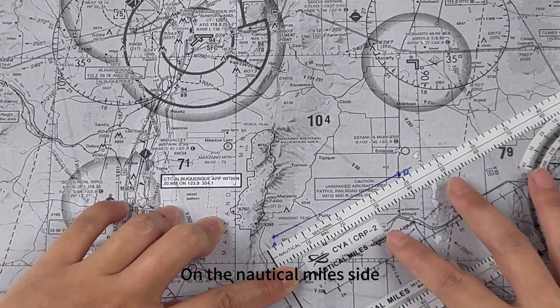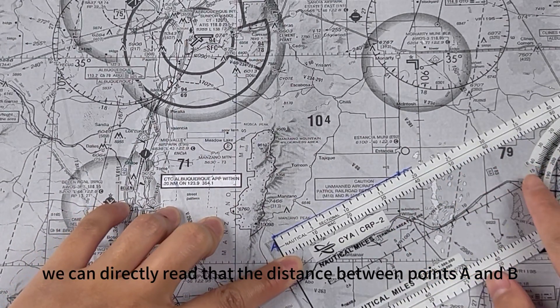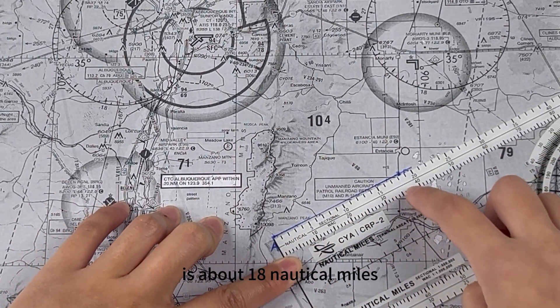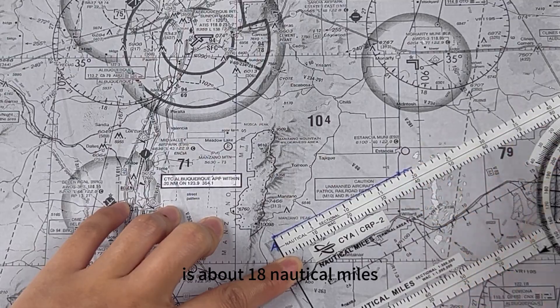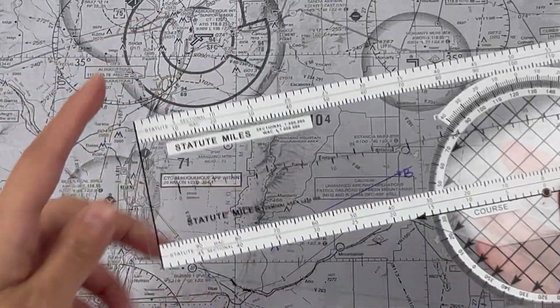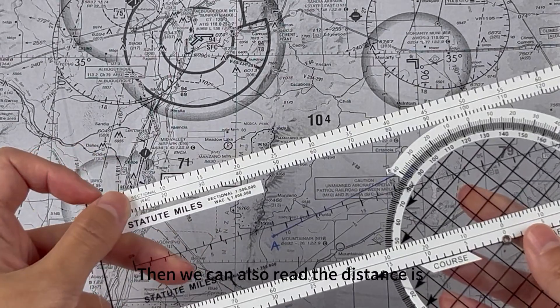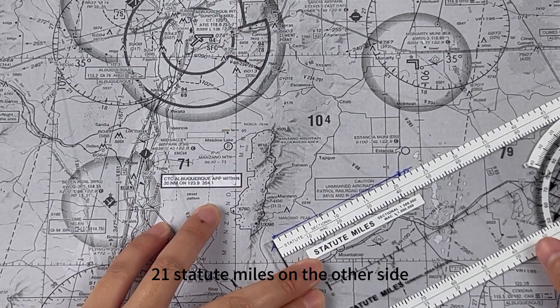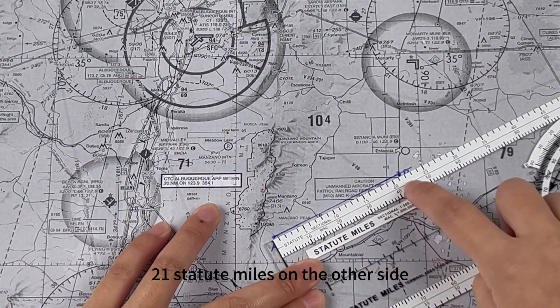On the nautical miles side, we can directly read that the distance between points A and B is about 18 nautical miles. Then we can also read the distance, 21 statute miles on the other side.